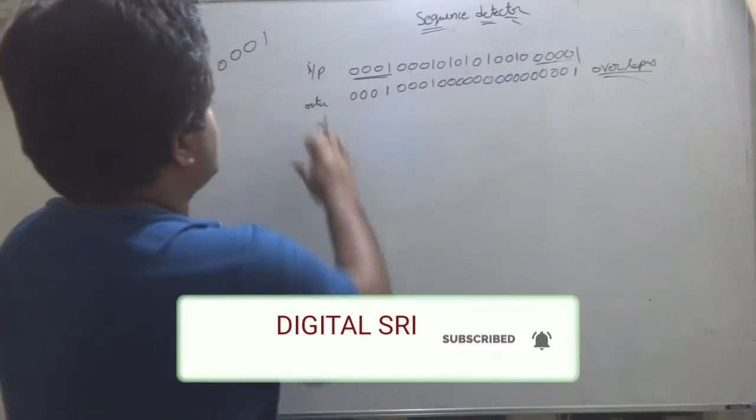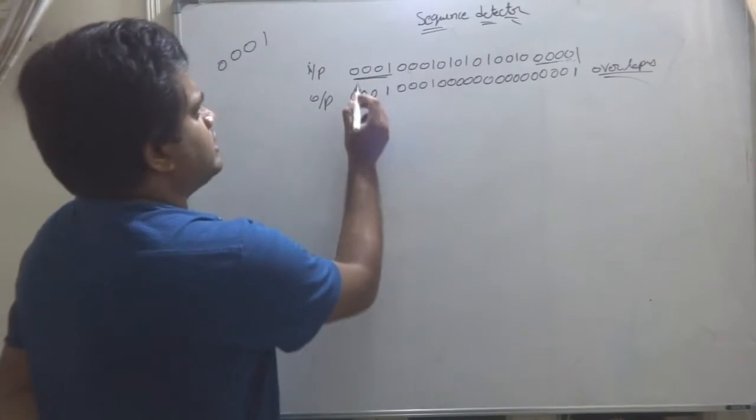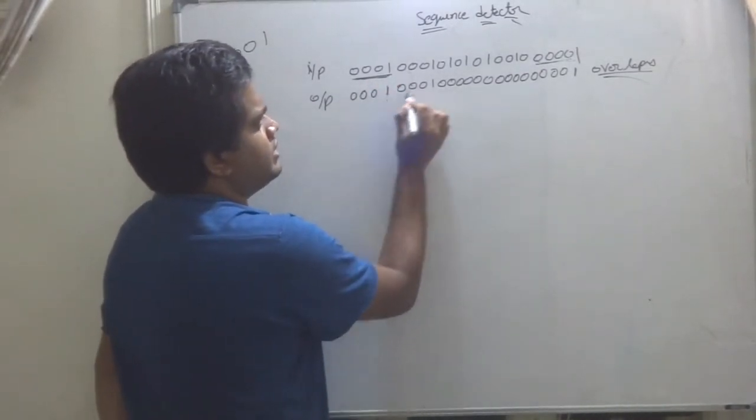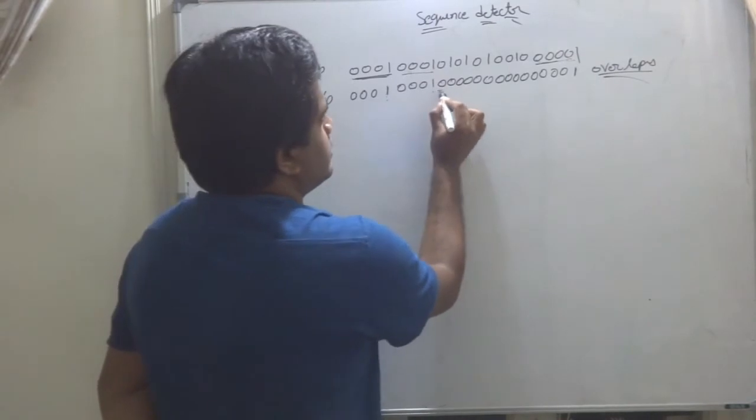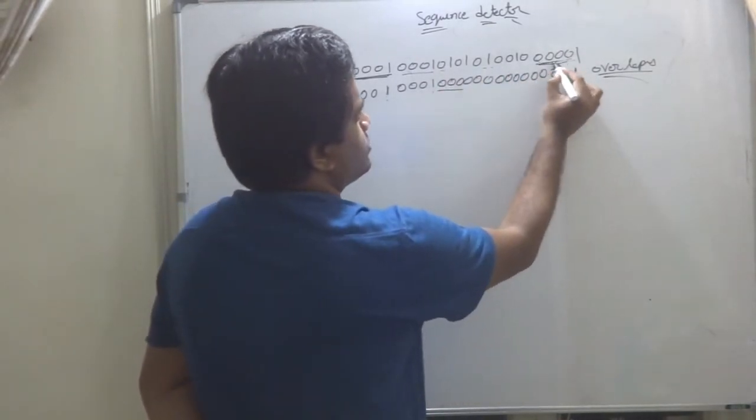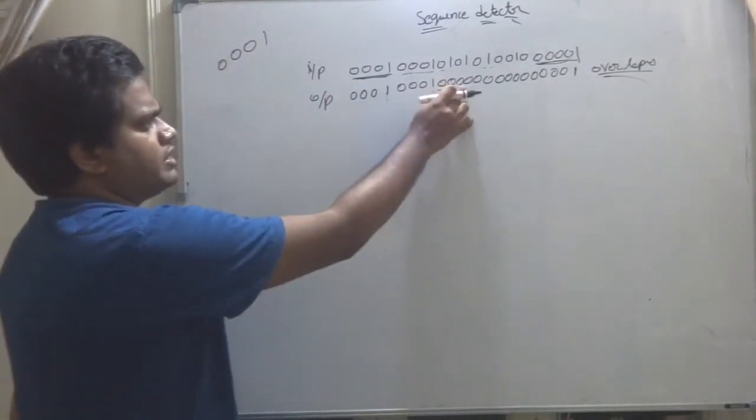This is my output. For overlapping, see here, 001 is there. Here, 1 will sequence detected, 1 is here. Here also sequence rate 1 is here. This is all not detected, not detected. Here again detected, 001, that's why here 1. This is the output you know already. Now I am writing a state machine for that.